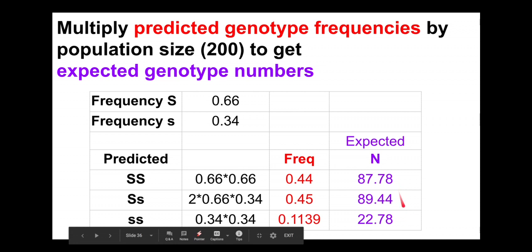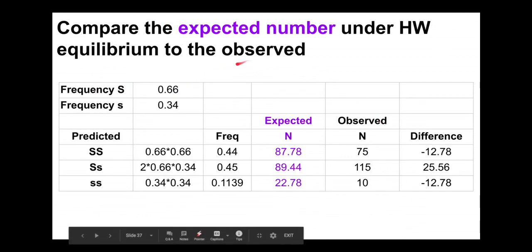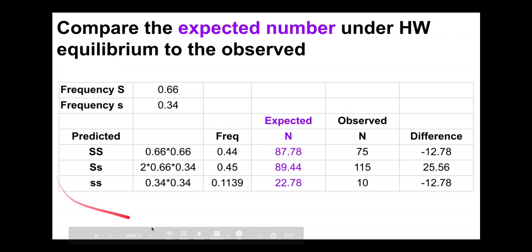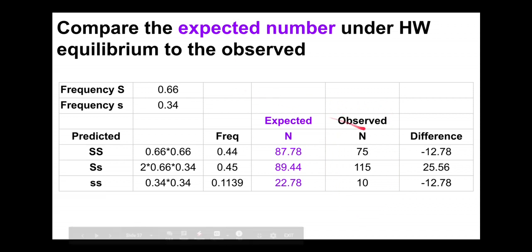Here's a summary table. I got allele frequencies from the observed genotypes. These are the expected frequencies predicted under Hardy-Weinberg equilibrium, multiplied by 200 to give expected numbers. I then compare those expected numbers under Hardy-Weinberg equilibrium to the actual observed numbers from the sample — the real individuals we counted in the population.